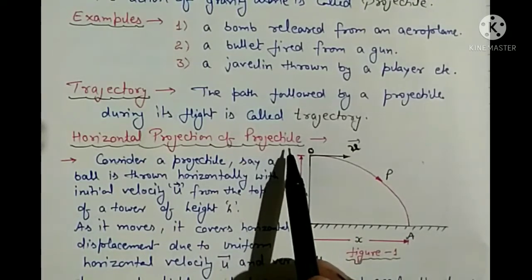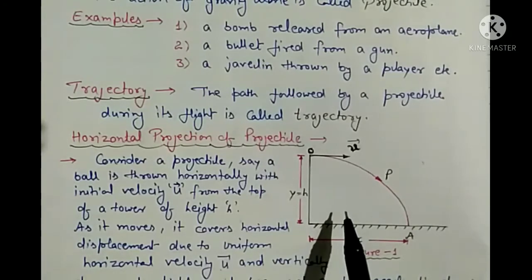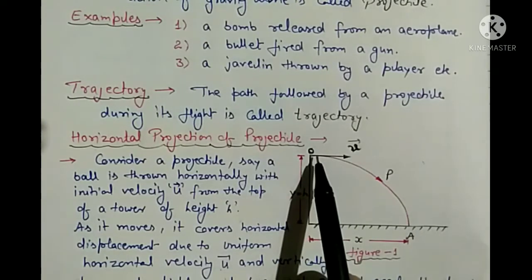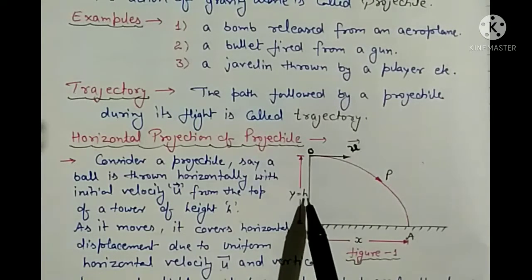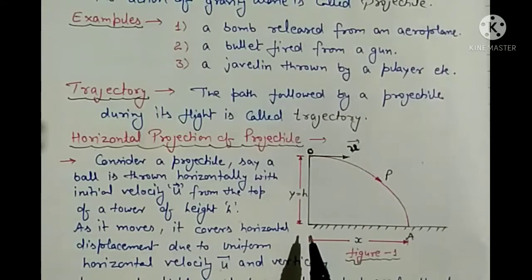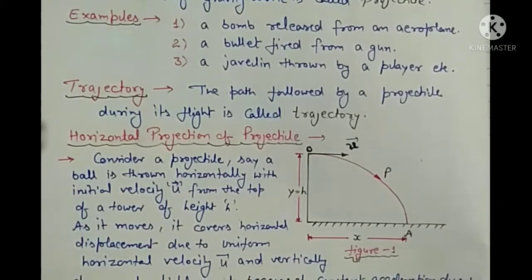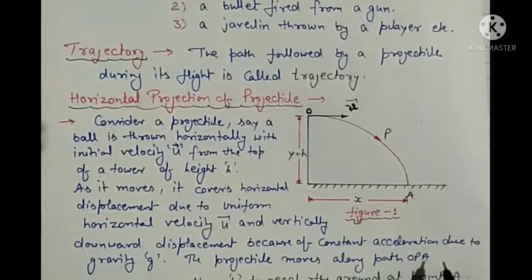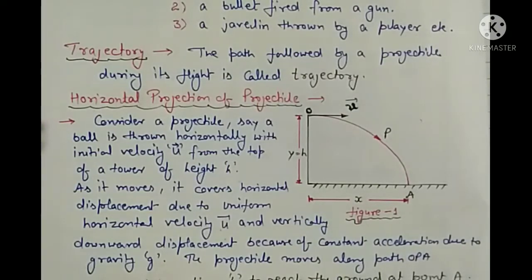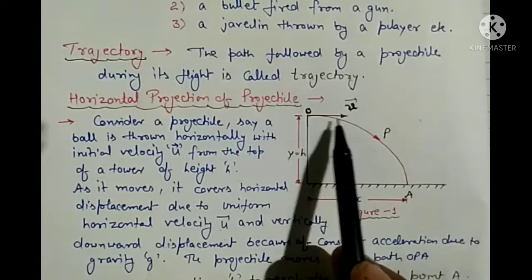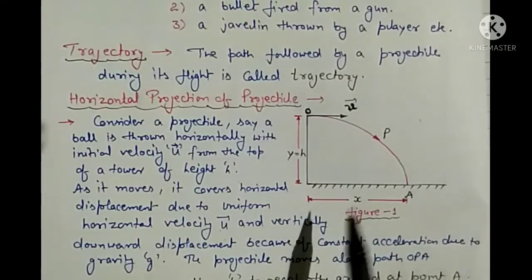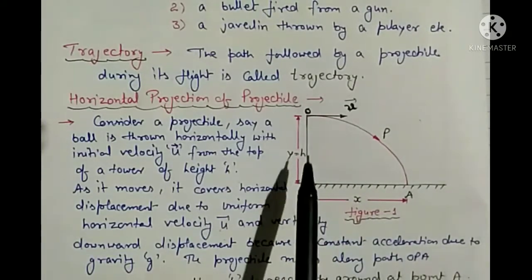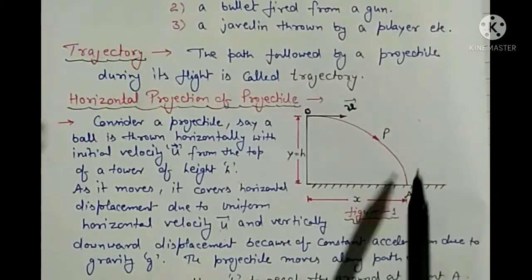Now, horizontal projection of a projectile — we consider a projectile thrown in the horizontal direction by giving some initial velocity u from the top of a tower of height h. As it moves, it covers horizontal displacement due to the uniform horizontal velocity u, and vertically downward displacement because of constant acceleration due to gravity. So we cover horizontal displacement and vertical displacement as we move along path OPA.